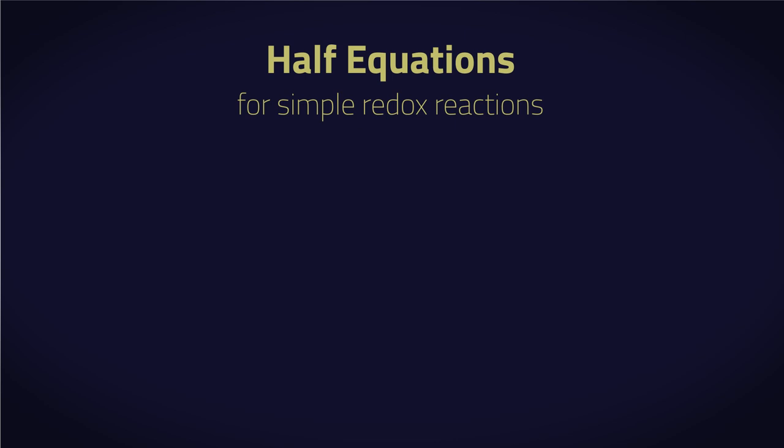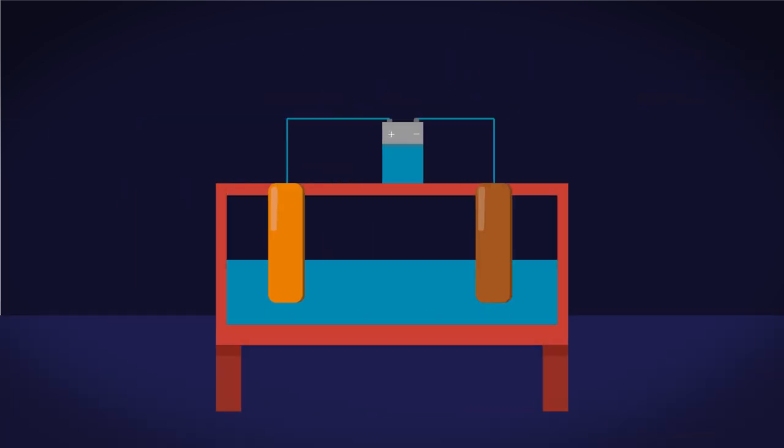In this video we will learn how to write half equations for simple redox reactions. A half equation shows what happens at one of the electrodes during electrolysis, so we do need to be able to complete and balance half equations for these reactions. Remember that oxidation occurs at the anode and reduction occurs at the cathode.